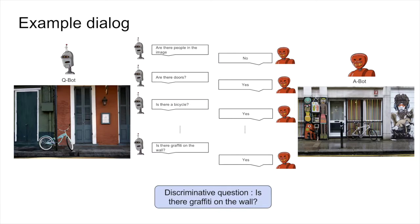An example of the dialogue would look like this. Here, the Qbot and Abot converge to conclude whether the images are the same or not.